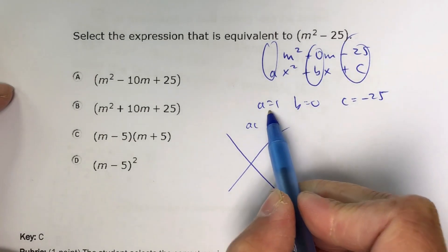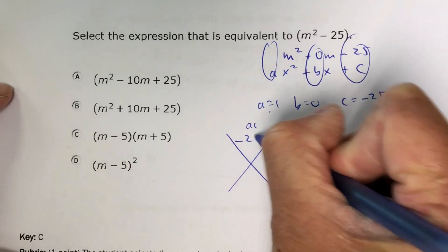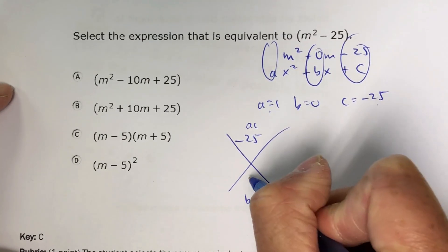My two numbers, a times c, a times c is negative 25. My b value is 0.